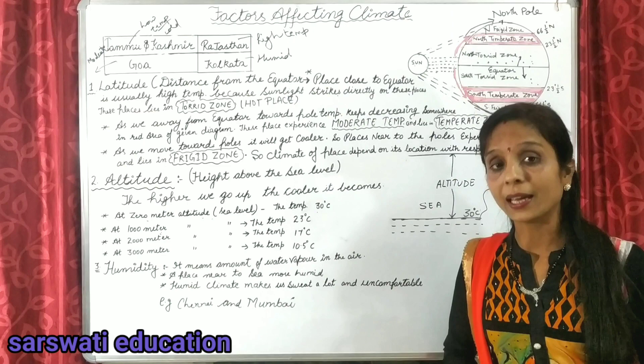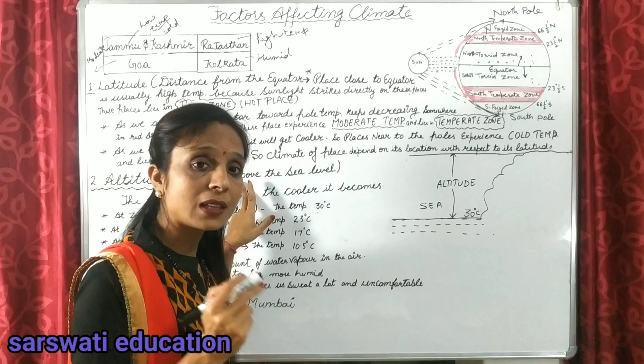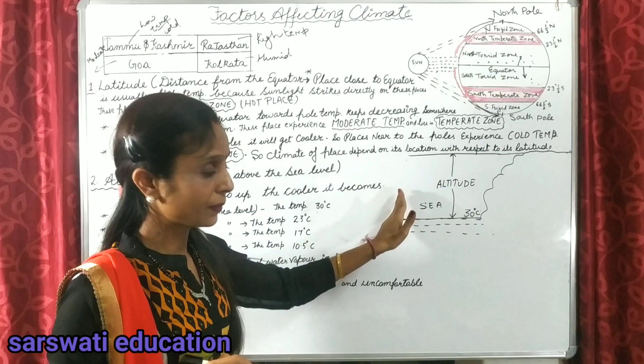The next factor that affects our climate is altitude. Altitude means height above the sea. As you can see in the diagram, this is our sea and this is the earth — height above the sea level.